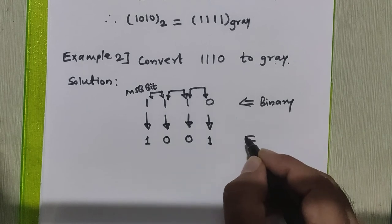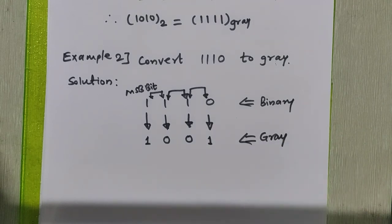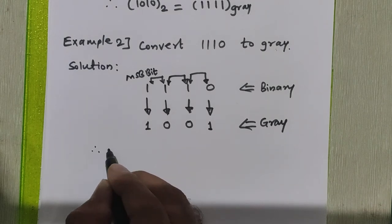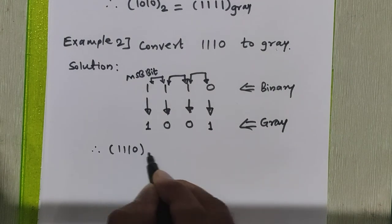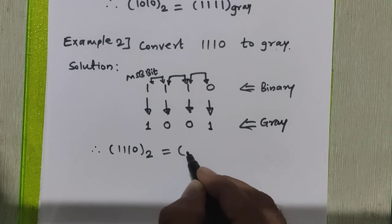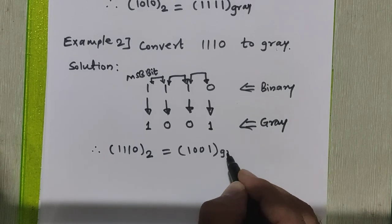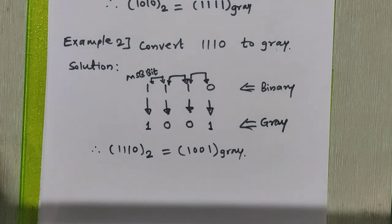So this is the grey code for the given binary number: 1110 binary is equal to 1001 in grey. This way we can convert any binary number to grey code.